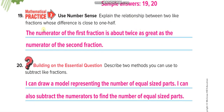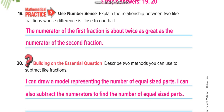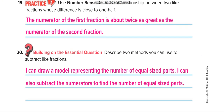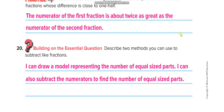Explain the relationship between two like fractions whose difference is close to one half. The numerator of the first fraction is about twice as great as the numerator of the second fraction. When the numerator of the first is double that of the second, subtracting them gives a result close to one half.